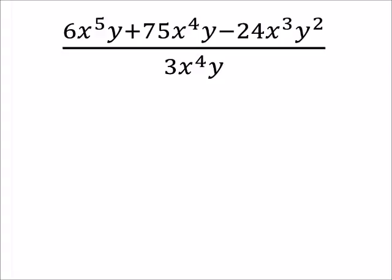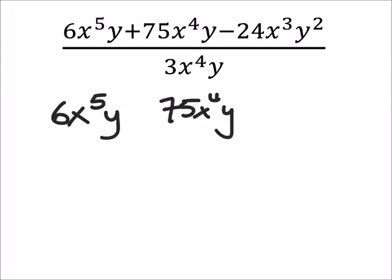We're going to have everything in the numerators, so we still have that 6x to the power of 5y, we got 75x to the power of 4y. That's supposed to be 4, and then that's a plus and minus.